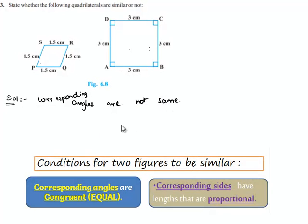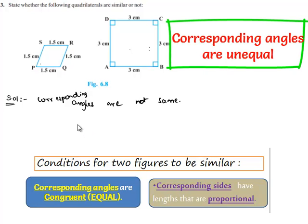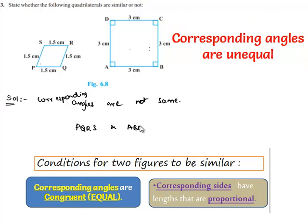So we can say that the given two figures, PQRS and ABCD, are not similar. Thank you.